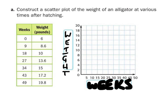Zero weeks, it was at six pounds. And then at nine weeks, 8.6 — so maybe right here. Eighteen weeks, you got a ten. And 27 and 13.6 — somewhere in there. 34 and 15. Forty-three and 17.2. And 49 and 19.8.